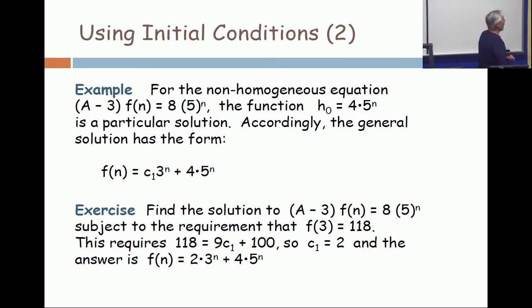I said here's a non-homogeneous equation. It's a linear equation, so the computation here is not too bad. So (A - 3) times f(n) is 8 times 5 to the n. And so I said the function h_0 equals 4 times 5 to the n is a particular solution.